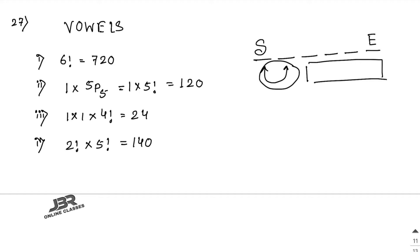Number five: all consonants come together. In VOWELS, the consonants are V, W, L, S — treat as one group, arranged in 4! ways. Now we have 1 group + 2 vowels = 3 units, arranged in 3! ways. So total = 4! × 3! = 24 × 6 = 144.